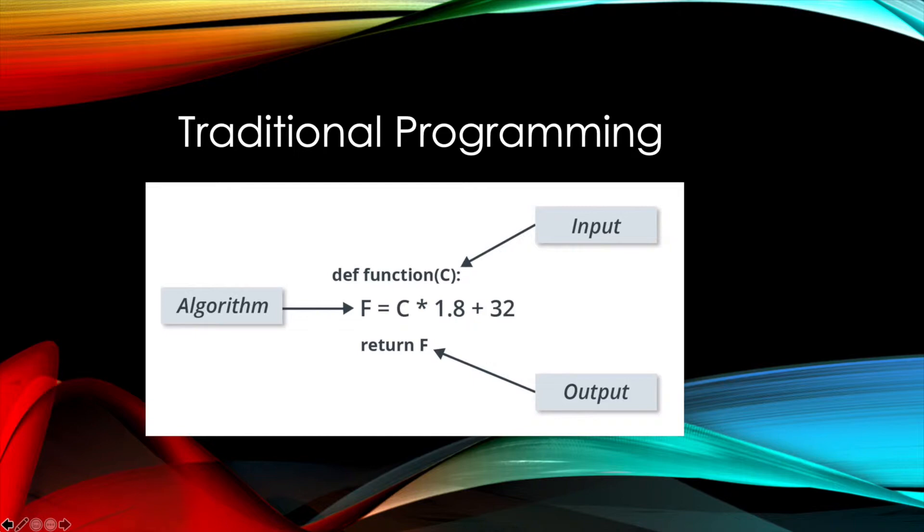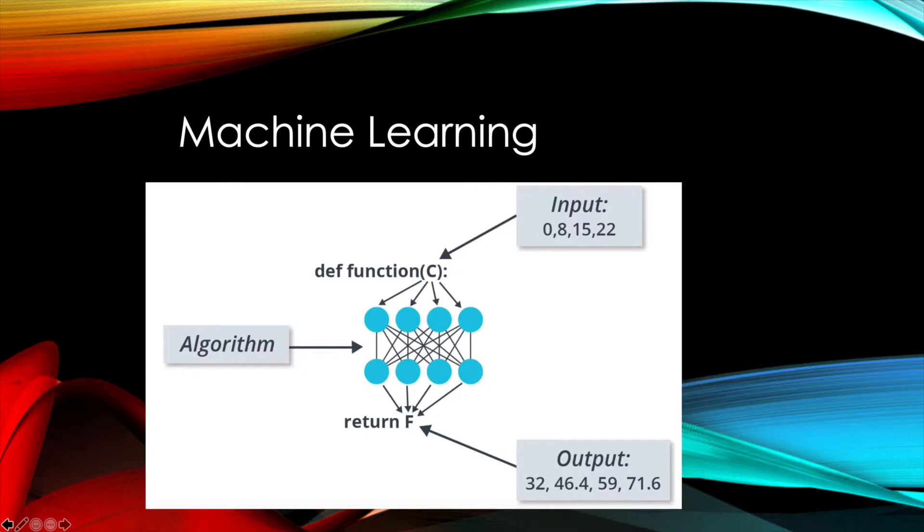In machine learning, we can do the same thing. We can define a function, we can train that function that when it sees a certain Celsius temperature, that it should produce the corresponding Fahrenheit temperature as output. And if we train the algorithm sufficiently effectively, then it'll produce the conversion that we want.